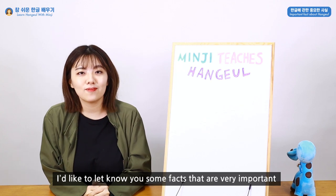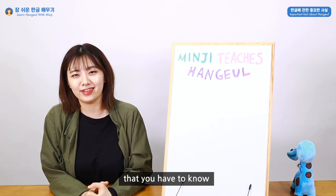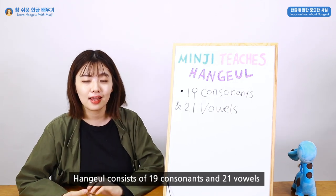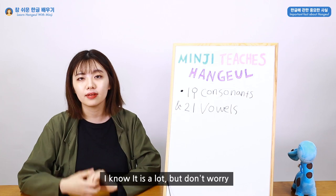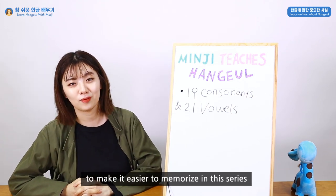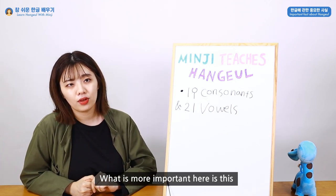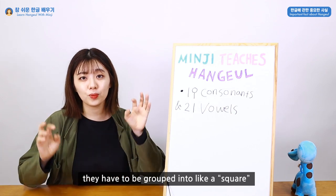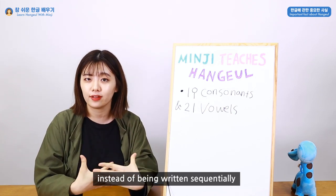I'd like to let you know some important facts. First of all, Hangul consists of 19 consonants and 21 vowels. I know it's a lot, but don't worry — I will narrow it down to make it easier to memorize in this series. More importantly, Korean consonants and vowels have to be grouped into a square shape instead of being written sequentially.